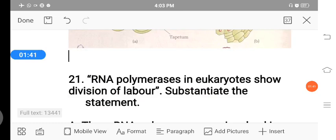Then 21st question, RNA polymerases in eukaryotes show division of labor, substantiate the statement. RNA polymerase enzyme, especially when it comes to eukaryotes, perform a function called division of labor. How we prove that?